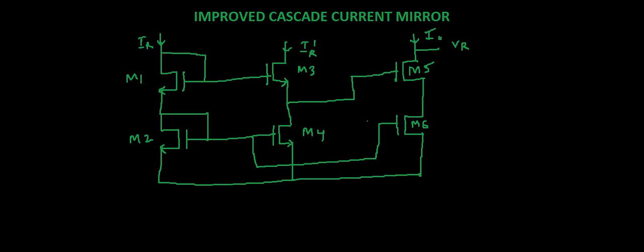Hello all, welcome to the new video of Signals and Systems. In the previous videos we studied about the cascade current mirror and also we saw what is the output voltage at the drain of M3.